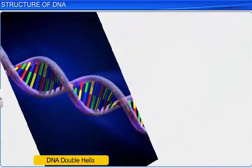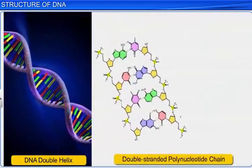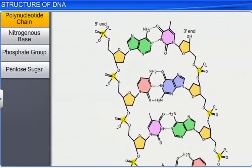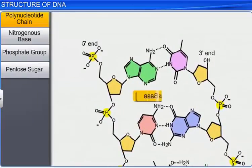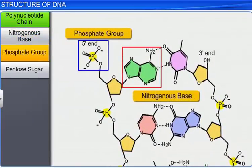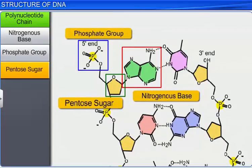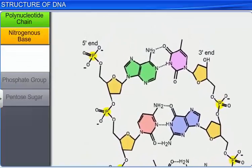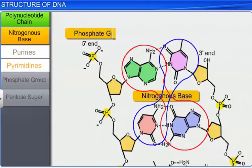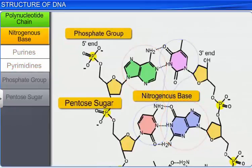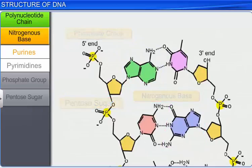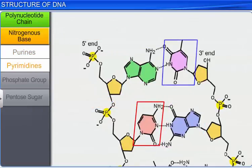Let us now learn about the chemical structure of a polynucleotide chain present in the DNA double helix structure. The polynucleotide chain is made up of three components: a nitrogenous base, a phosphate group, and a pentose sugar, which is deoxyribose. Further, the nitrogenous base is of two types: purines and pyrimidines. The purines comprise adenine and guanine, while the pyrimidines comprise cytosine and thymine.